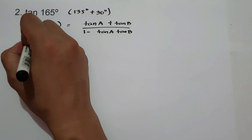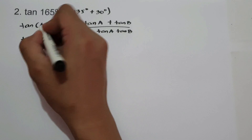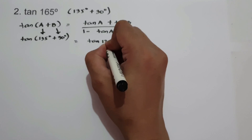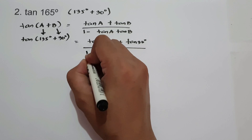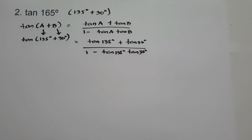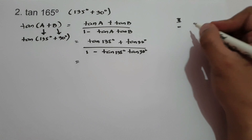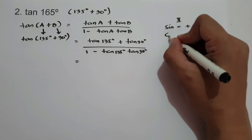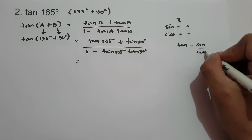Let's simplify: A is 135 degrees and B is 30 degrees. So we have tan 135° + tan 30°, all over 1 minus tan 135° times tan 30°. Because 135 degrees is located in quadrant 2, sine in quadrant 2 is positive and cosine in quadrant 2 is negative, and tangent equals sine over cosine.